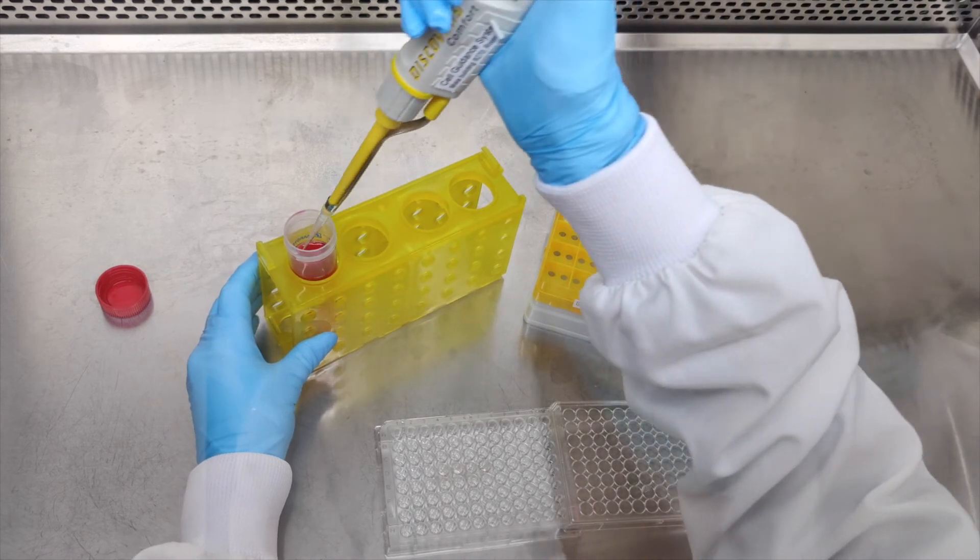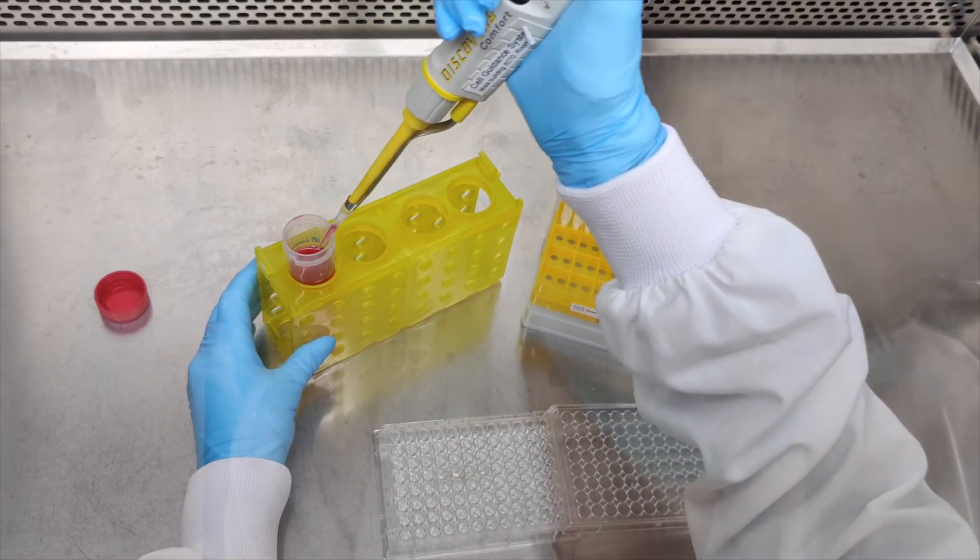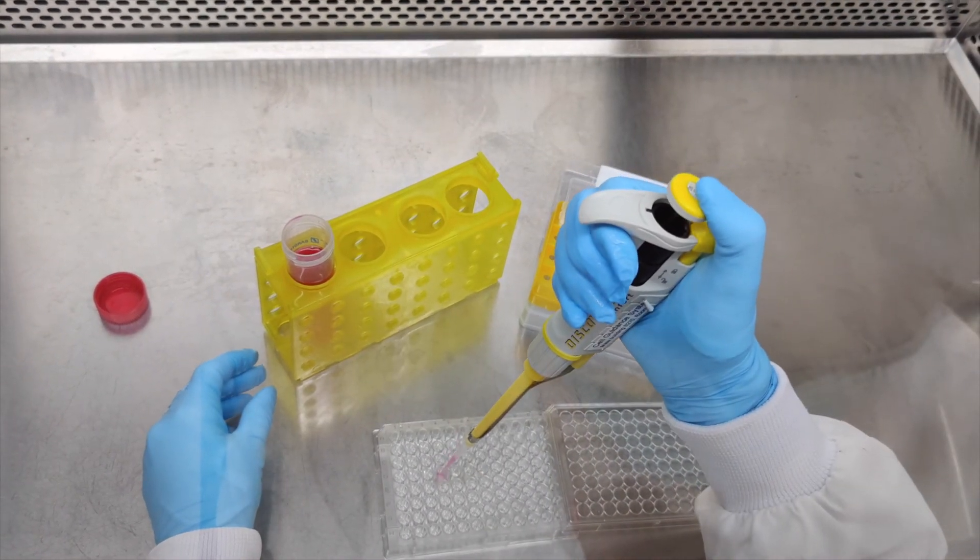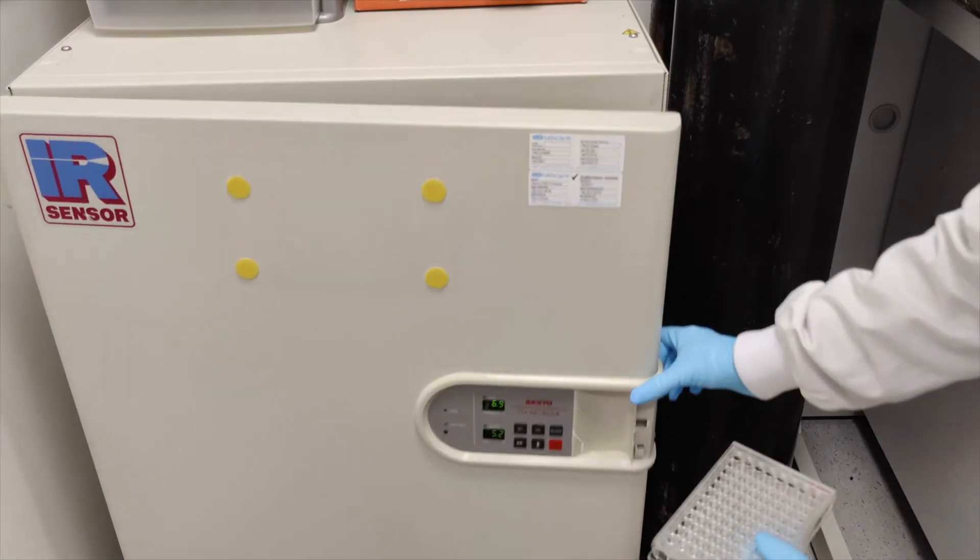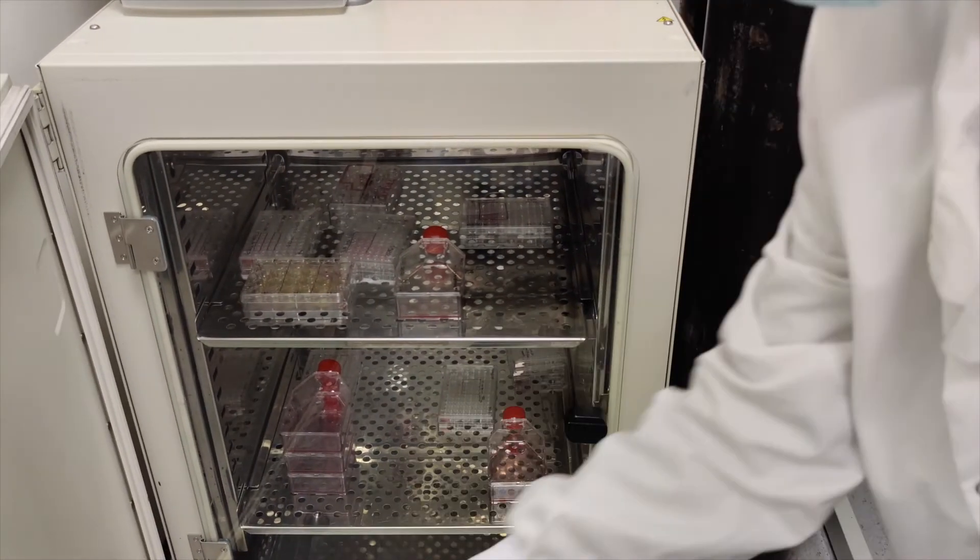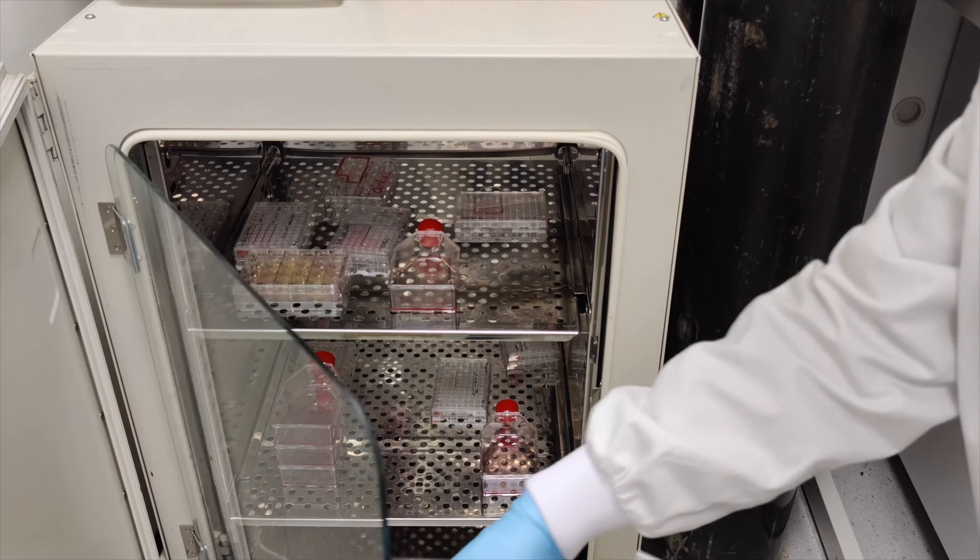Add enough cell culture media to each well to cover the peptagel. Place the well plate in the incubator at 37 degrees Celsius.